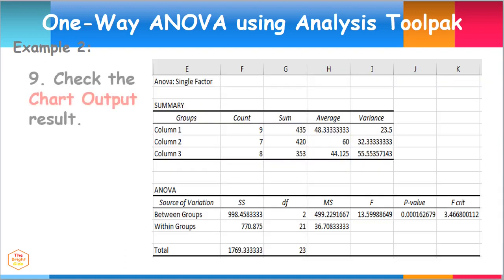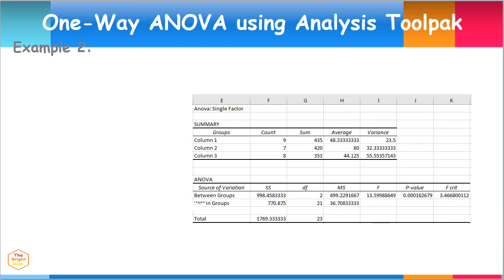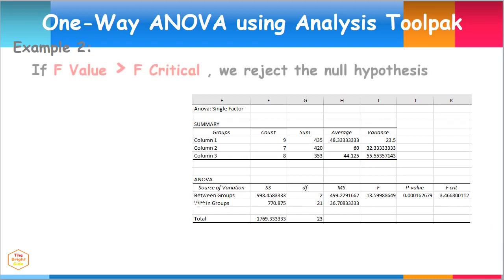Check out the chart output results for the single factor ANOVA. Here we are provided the mean and variances for both variables. Also, there are results for the F value, F critical, and P value. The decision rule is: if the F value is greater than F critical, we reject the null hypothesis.